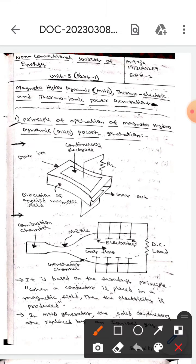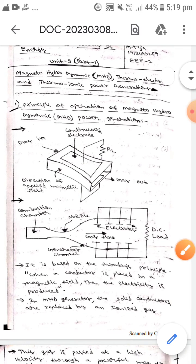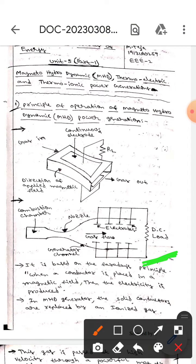This is gas out, this is gas in, whereas this is the continuous electrode. This is the direction of applied magnetic field, where this is the RL load resistance load.